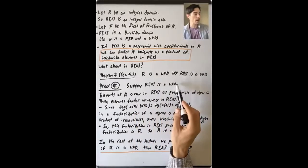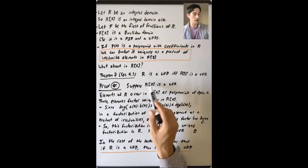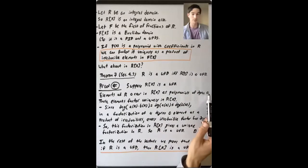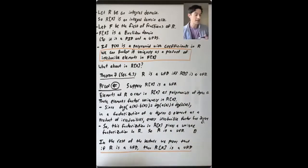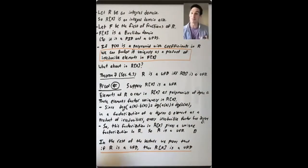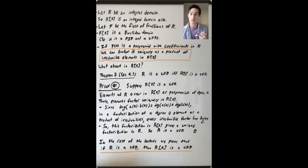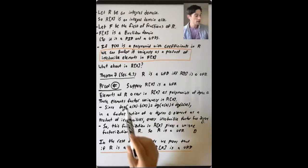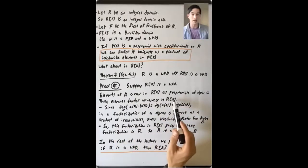Suppose that R[x] is a UFD. R is a subring of R[x]; elements of R occur in R[x] as polynomials of degree zero. So if you know that everything in R[x] factors uniquely in R[x], and since R occurs naturally as a subring of R[x], that tells you something about factorizations in R already. Take a non-zero, non-unit element of R — which is a polynomial of degree zero in R[x] — and these elements factor uniquely in R[x] into a product of irreducible elements, up to associates.